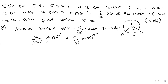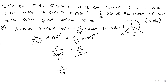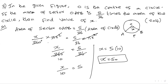Pi r squared cancels on both sides. So x divided by 360 equals 5 divided by 36. Since 36 into 10 equals 360, we get x by 10 equals 5. Therefore x equals 5 into 10, which is 50 degrees.